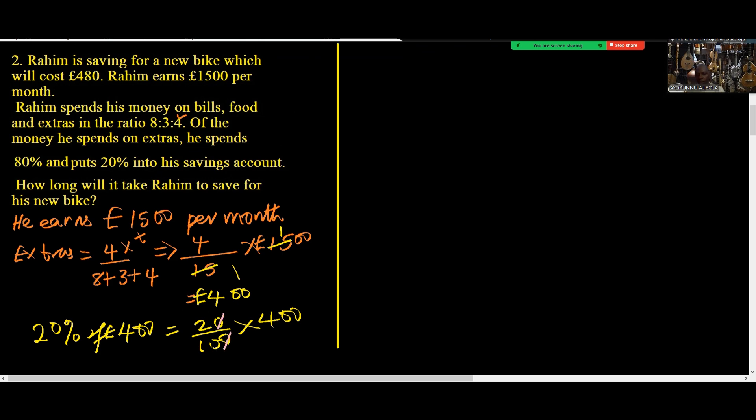Zero cancels zero, another zero cancels zero. So 40 times 2 is 80. So £80 is what he saves in a month. He saves £80 per month.